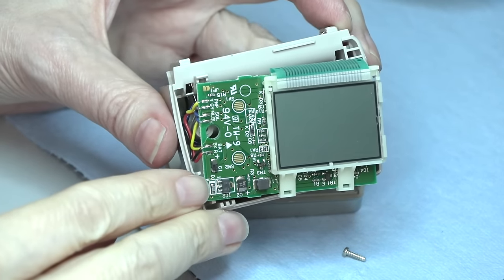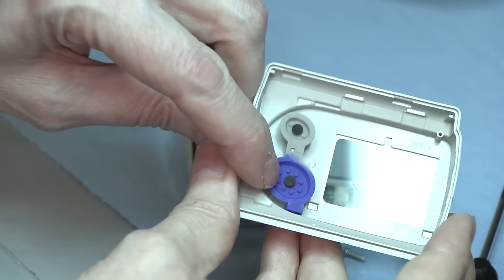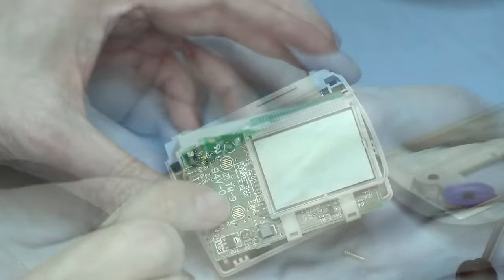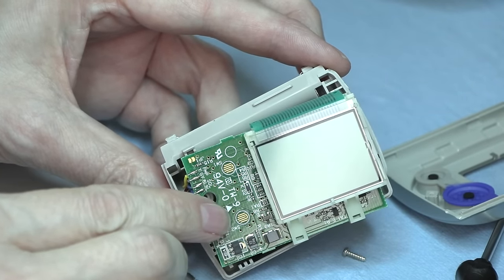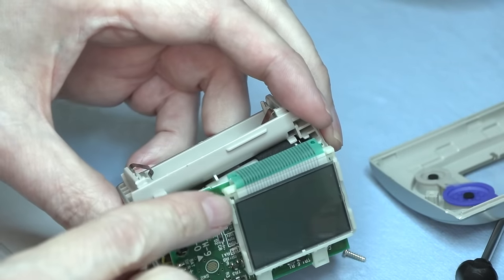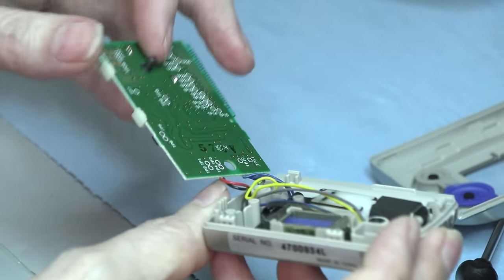There's the screen. Some switches there. Carbon two-shot switches there. Just little rubbery switches with a little carbon dot interface with those little switch traces on the board. Got a zebra strip. The old zebra strip.